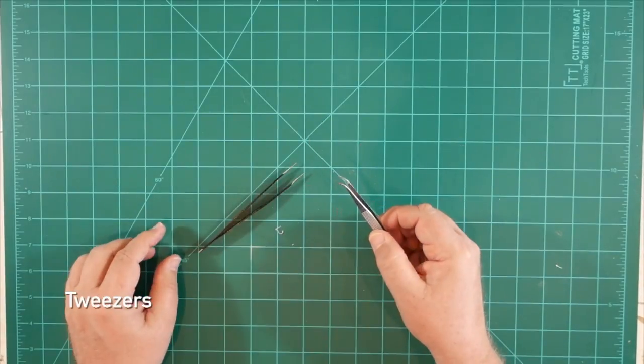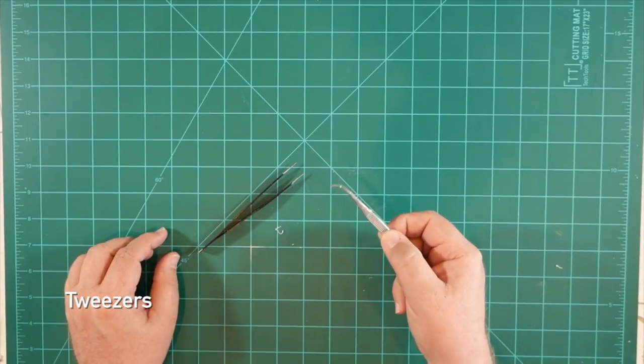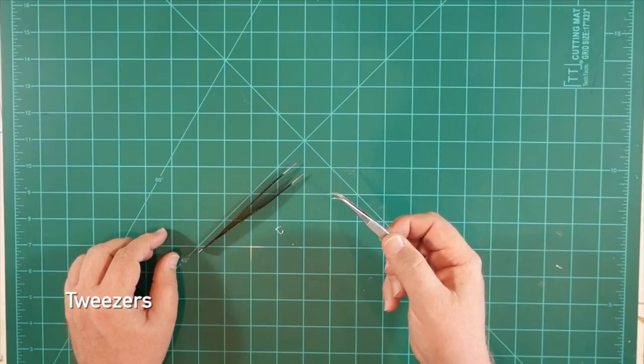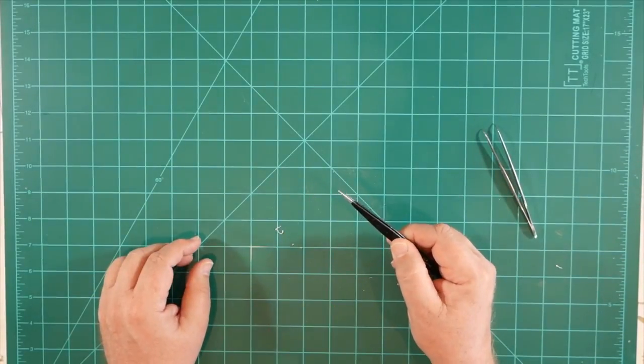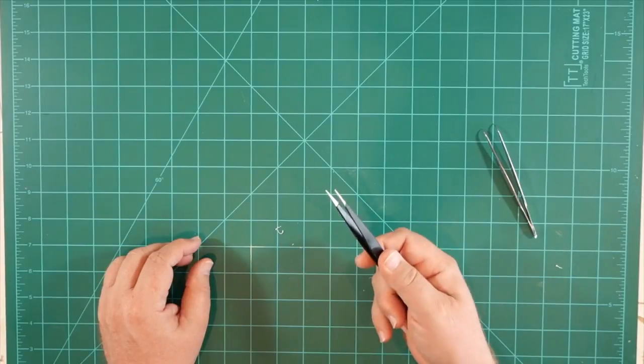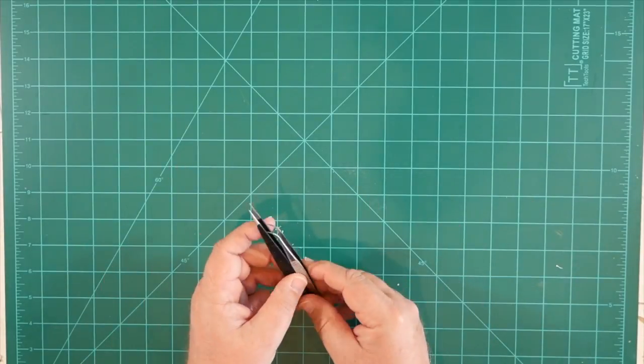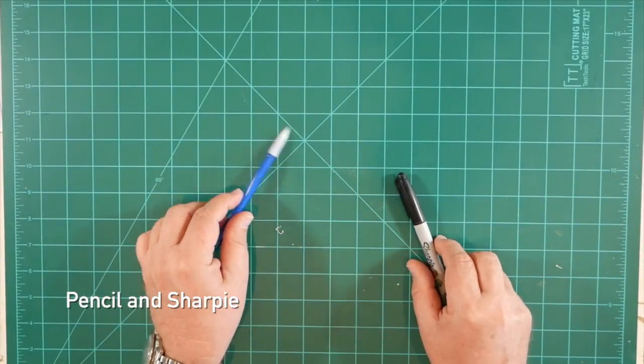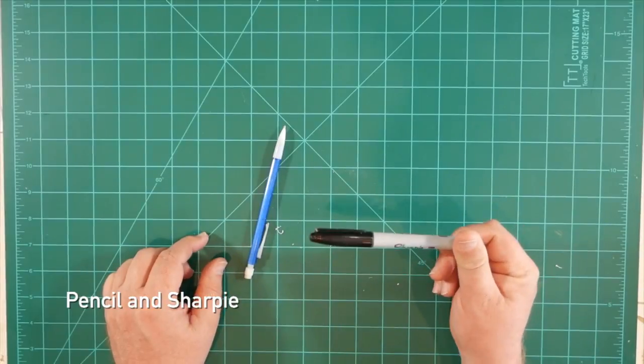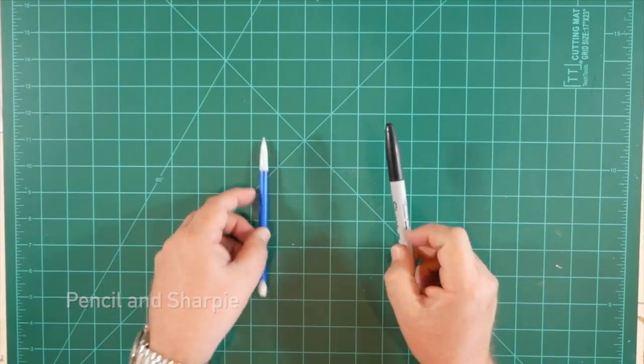You'll also want to have some tweezers on hand. These are some curved tip tweezers that I've had for years that seem to be my standby for smaller parts. These are some straight tip tweezers. I don't seem to use these nearly as much but it's very much a preference thing. Whatever works for you, great. We'll also need a pencil for marking some of the components on the kit and there's one step in particular that's going to call for a Sharpie. So have those on hand as well.